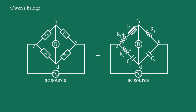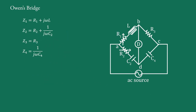We assume that condensers are without losses and all the resistances are perfectly non-reactive. If we compare the components of the arms of Owen's Bridge with the components of the respective arms of the basic bridge, then they are: Z1 equal to R1 plus j-omega-L, Z2 equal to R2 plus 1 upon j-omega-C2, Z3 equal to R3, and Z4 equal to 1 upon j-omega-C4.